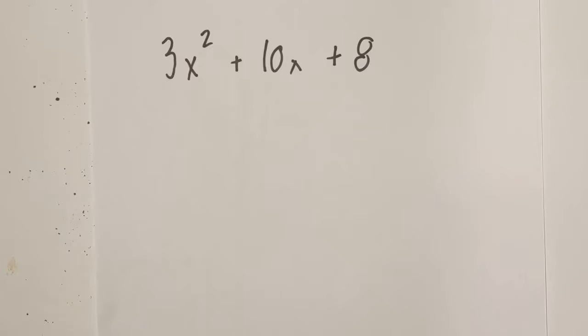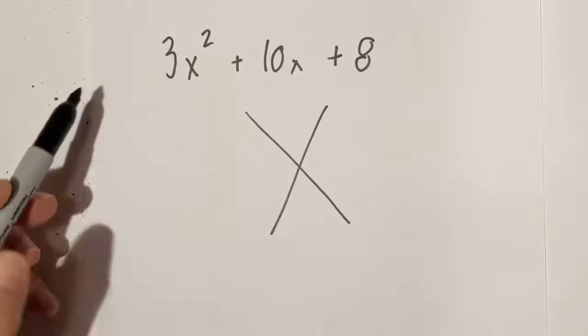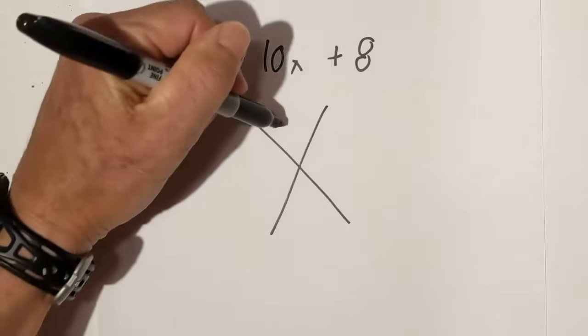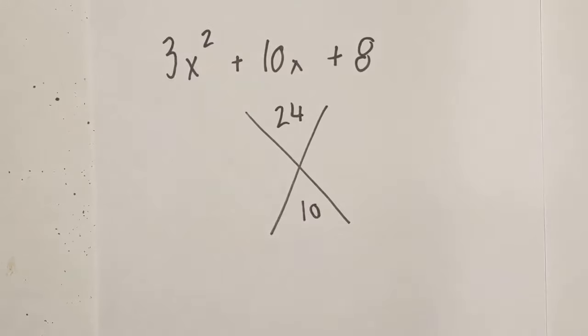So let's get started with the first example. I'm going to write the X and multiply a times c, which is 24, and bring down b. So far so good.